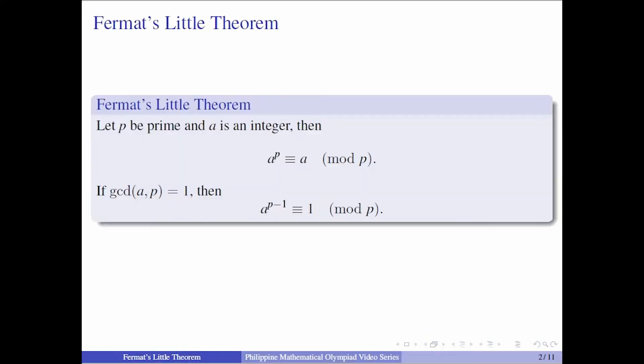Let p be a prime and a be an integer. Then Fermat's Little Theorem states that a^p ≡ a (mod p). And if gcd(a, p) = 1, then a^(p-1) ≡ 1 (mod p). As a remark, if gcd(a, p) = 1, then Fermat's Little Theorem is just a special case of Euler's Theorem where n is a prime. I highly recommend that you go back to our video on Euler's Theorem to learn more about it.